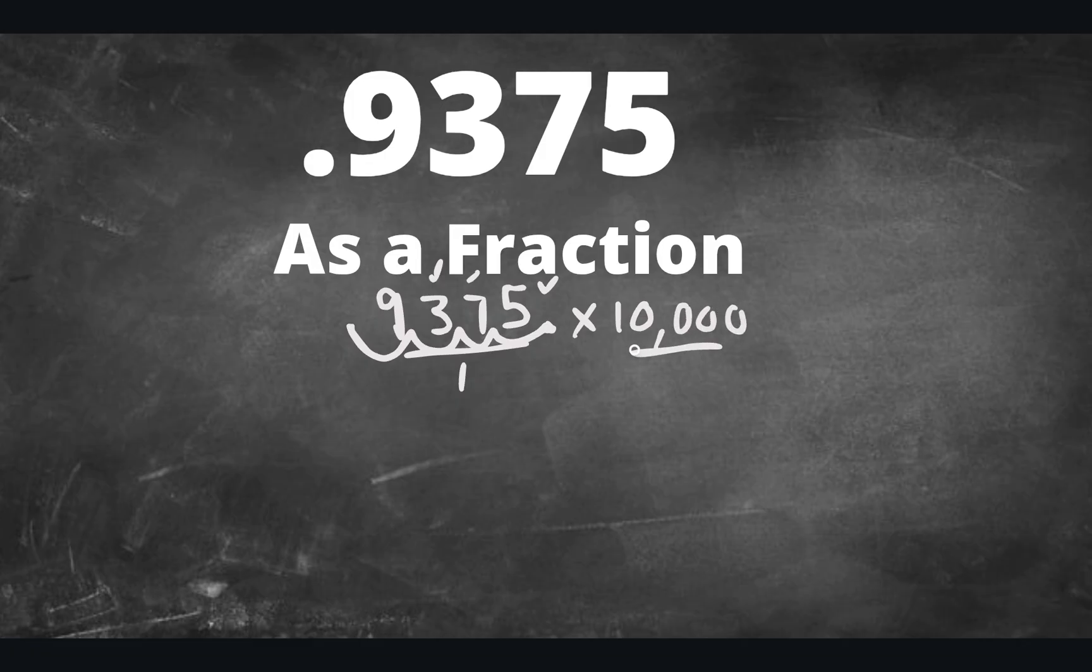Now, what we do to the numerator, we need to do to the denominator, so let's multiply the 1 by ten thousand. When that happens, we have 9,375, and the way we got this is we move the decimal 1, 2, 3, 4 places, and then 1 times 10,000 is 10,000.